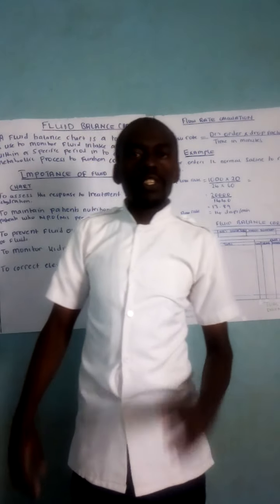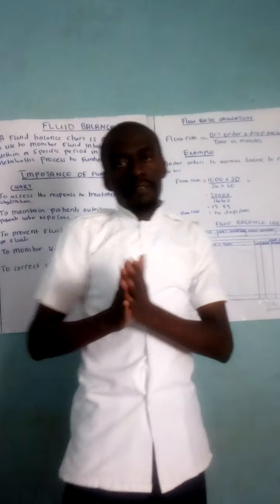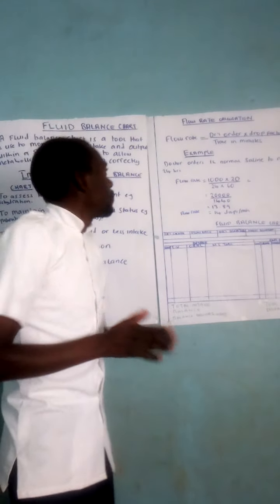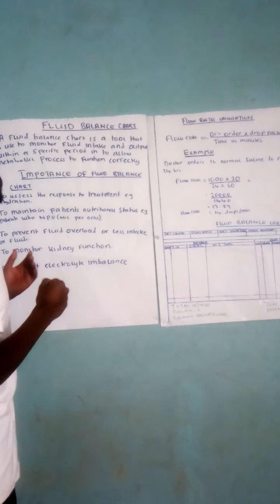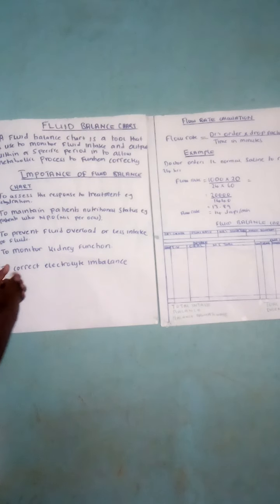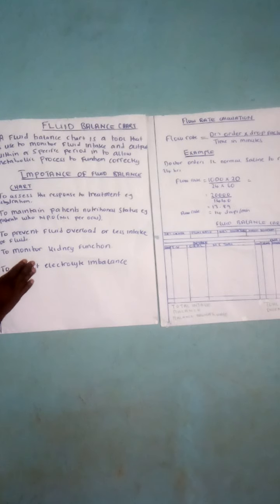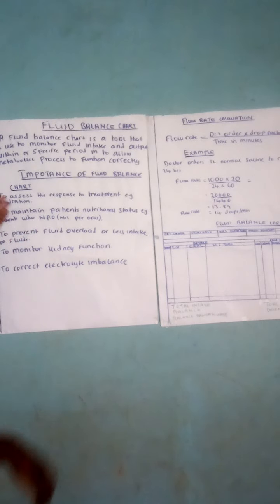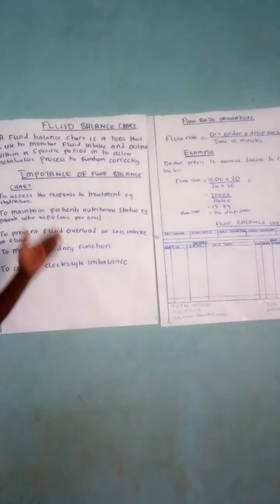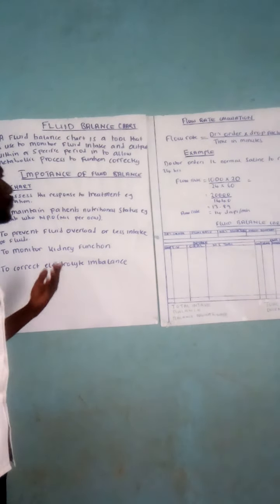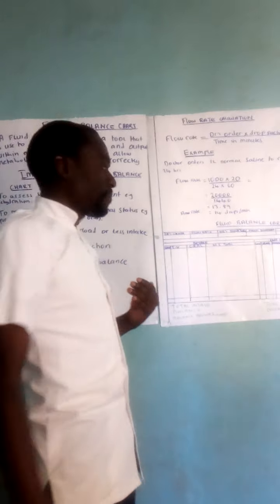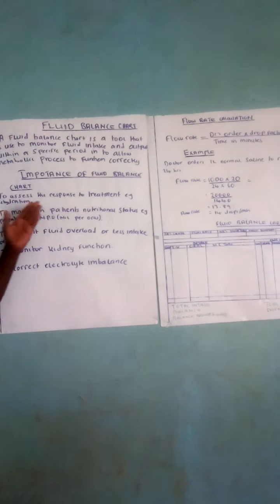We'll be discussing our fluid balance chart. Start by defining what a fluid balance chart is. A fluid balance chart is a tool that is used to monitor fluid intake and output within a specific period of time, in order to allow metabolic processes to function correctly.